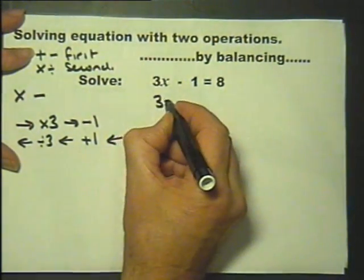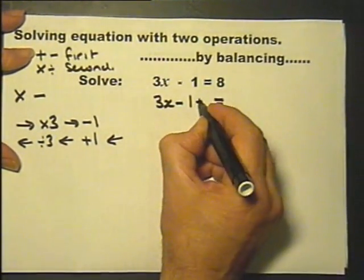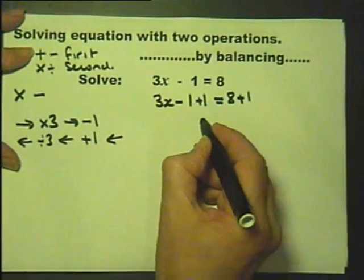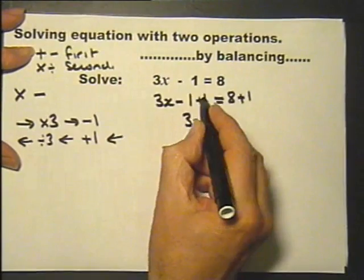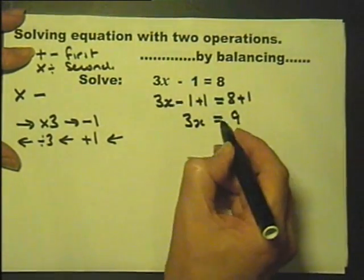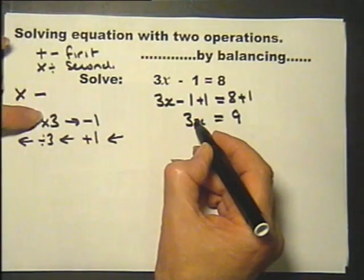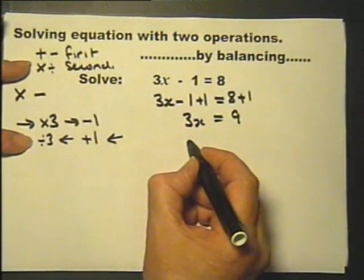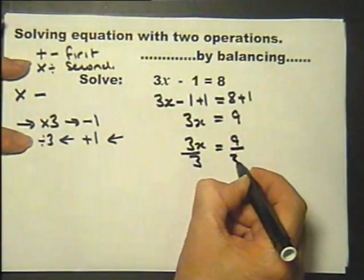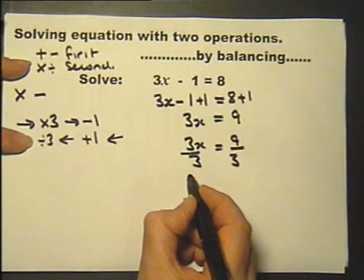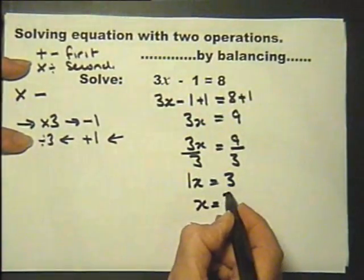So, what we do first is we do the inverse of subtract 1 which is to add 1 but we must do it to both sides. If we do that we're left with 3x plus 0 equals 9. Now we do the inverse of multiply by 3 which is divide by 3 but we must do it to both sides. 3 divided by 3 is 1 so that's 1x equals 9 divided by 3 which is 3 so x itself equals 3.